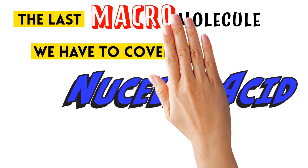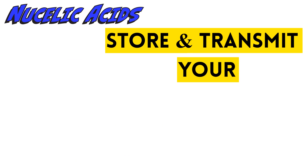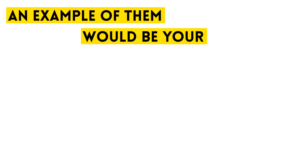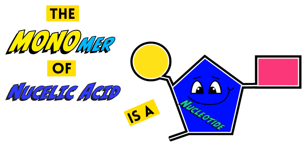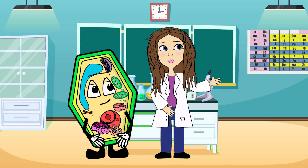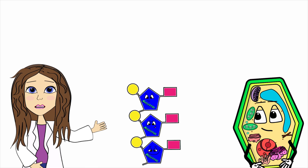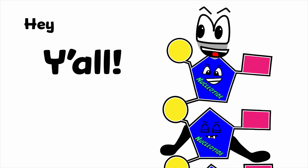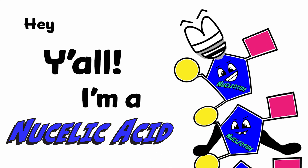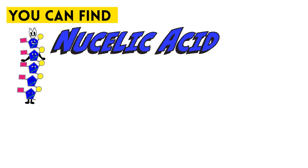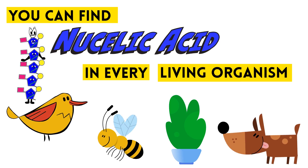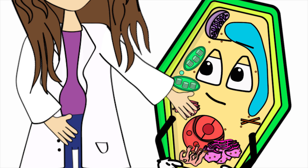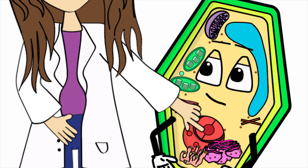The last macromolecule we have to cover is nucleic acid. Nucleic acids store and transmit your genetic information. Examples of them would be your DNA and RNA. The monomer of nucleic acid is a nucleotide. If you put together a bunch of nucleotides, you create a nucleic acid. You can find nucleic acid in every living organism — and PC, you have nucleic acid in your nucleus right here.